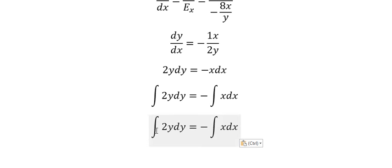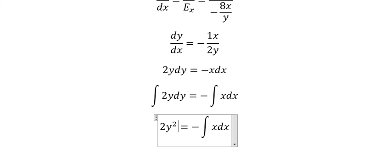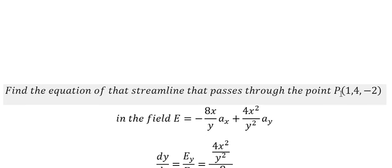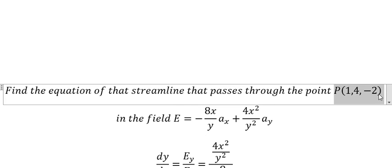So the integration of this one, we have 2y squared over 2. This one we have x squared over 2, and I will put C. Number 2 and number 2 we cancel. So now we have the conditions.